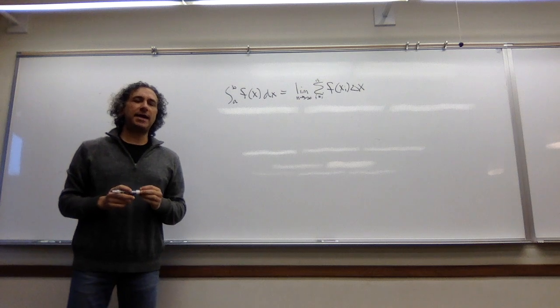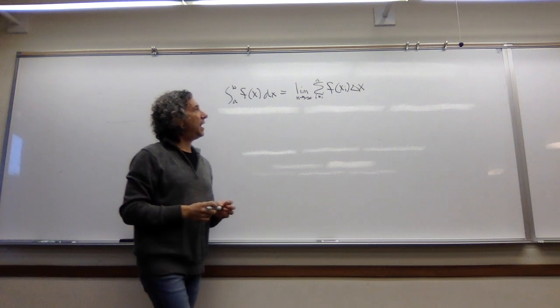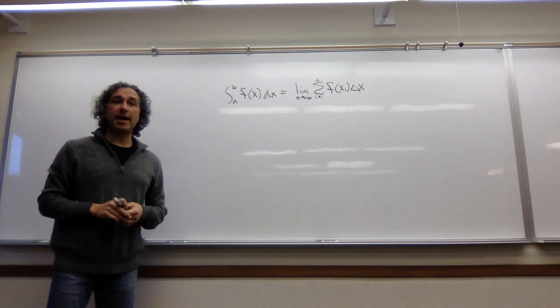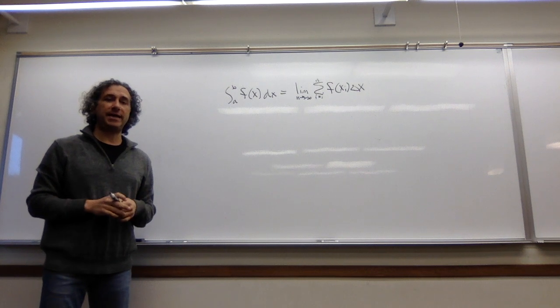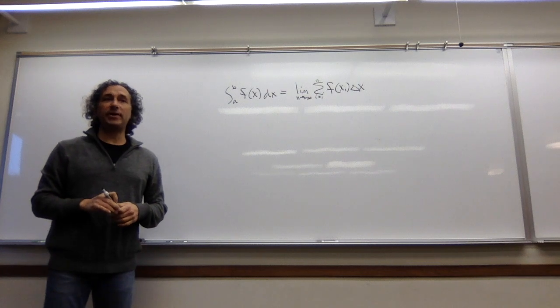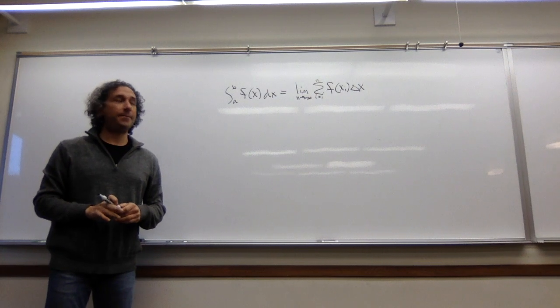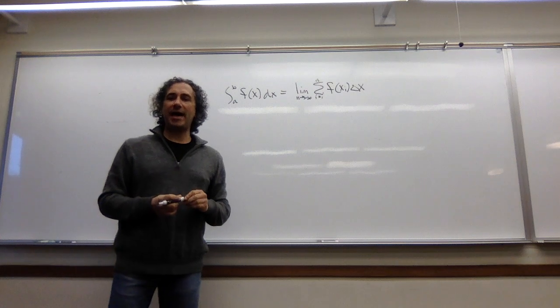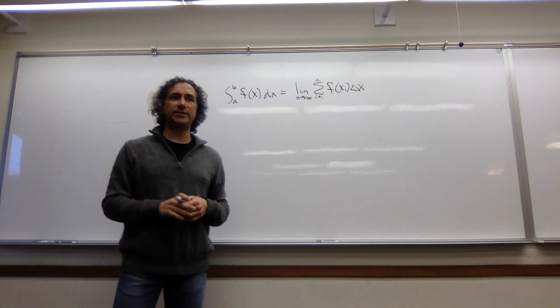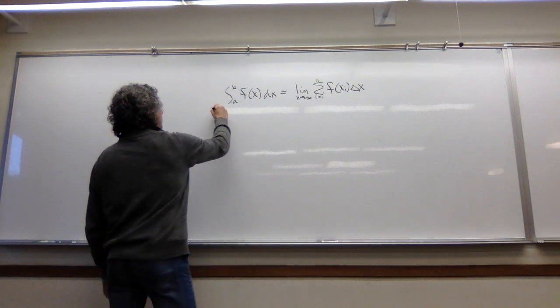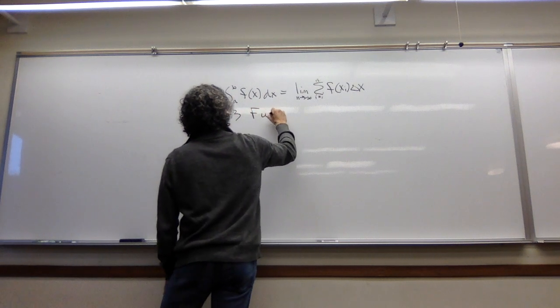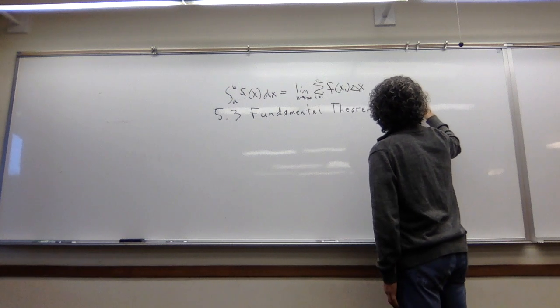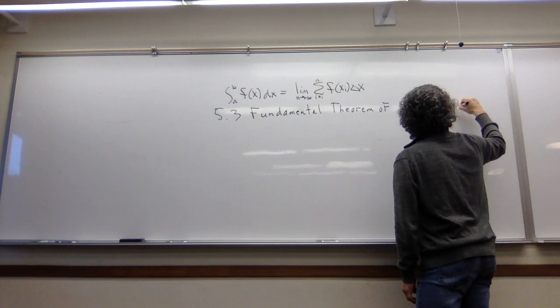Last time we saw that we had some tools to get around actually evaluating this limit. In particular, we had one tool which was to graph the thing and come up with the area using our understanding of area formulas. Today I want to introduce a much more powerful method that we can use to compute these limits, and it's a shocking formula that is incredibly helpful. This is 5.3, the final lecture. This is the Fundamental Theorem of Calculus Part 1.